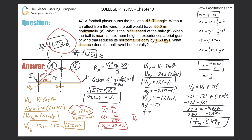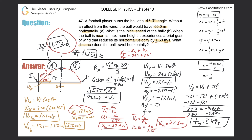For Part B: the average velocity of 15.6 equals displacement B divided by 1.75. So displacement B equals 15.6 times 1.75, which gives 27.3 meters. The total displacement is the sum of Part A and Part B: 29.9 plus 27.3 equals 57.2 meters. That is the total horizontal displacement.